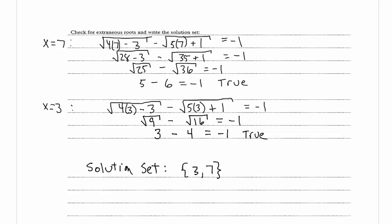And that's our video on solving a radical equation of the form a times the square root of f of x equals b times the square root of g of x plus k.